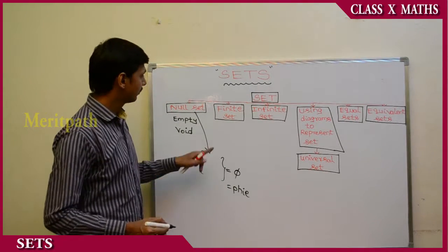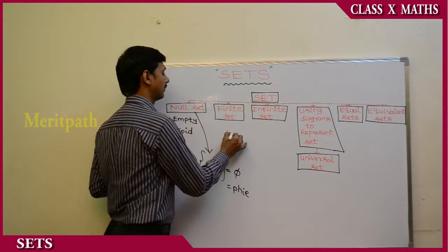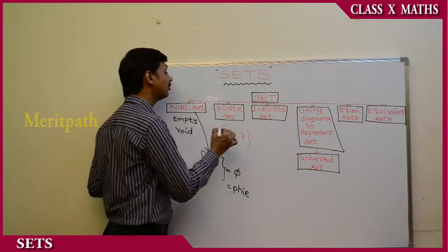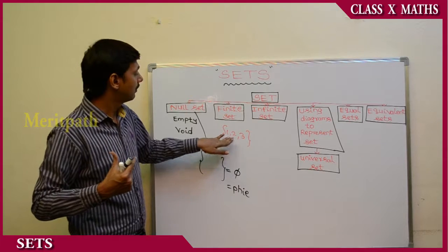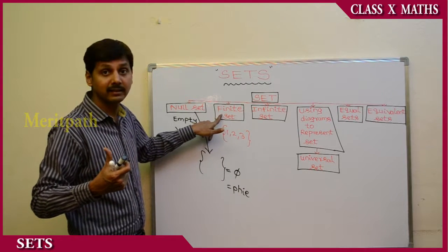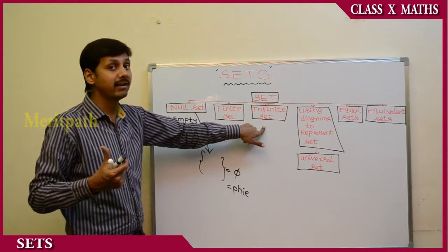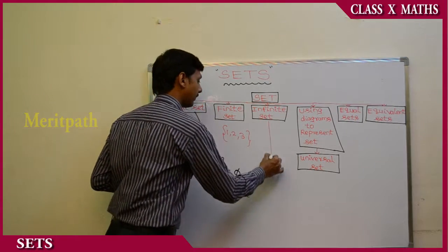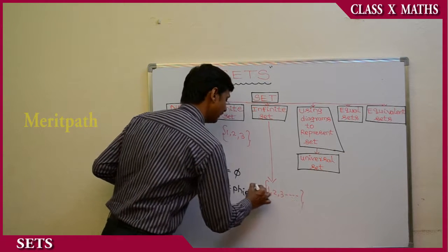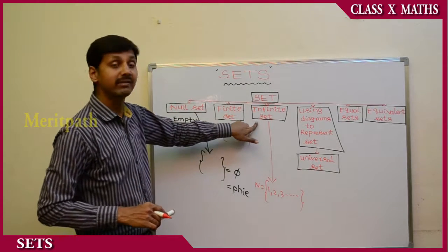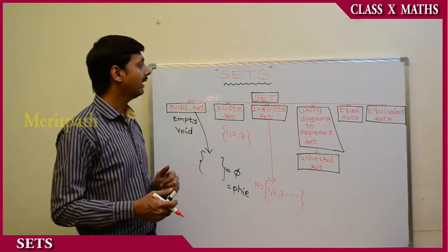A finite set is one where the number of elements in the set are countable — we are able to count how many elements are present. An infinite set is one where we cannot count all the elements. For example, the set of natural numbers (N) is an infinite set because we cannot define how many natural numbers are present.